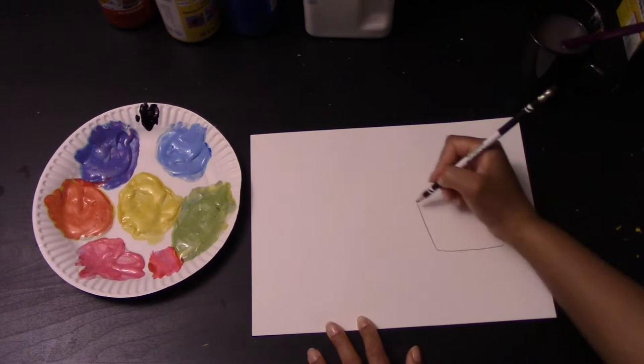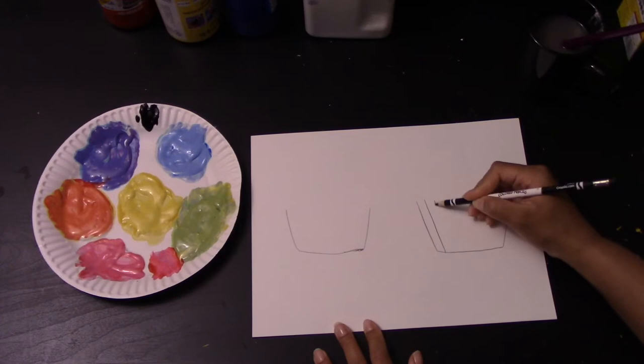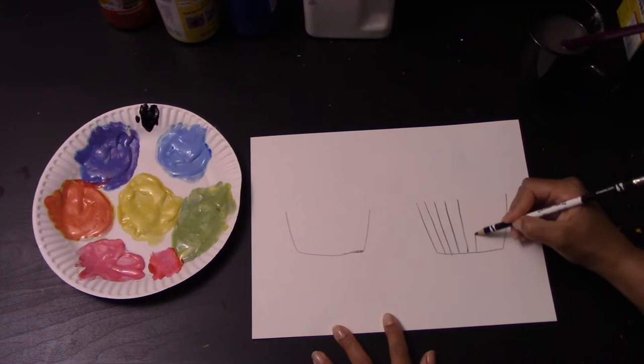Next, after you complete that you're going to draw lines from top to bottom. This is going to represent the ripples in the cupcake holder. Repeat that step for your other cupcake.